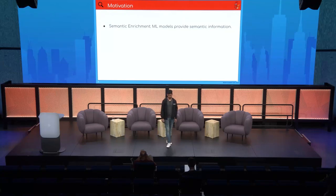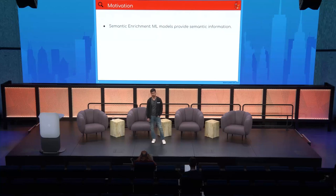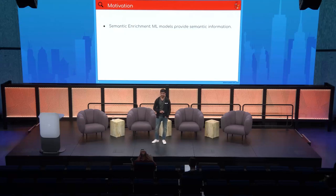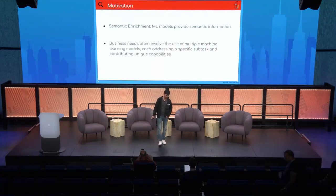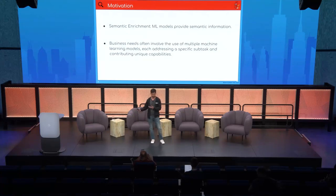Talking about the motivation: we all know that machine learning models are really good at providing semantic information. If you have an image, it can tell you what is present in the image or what the caption could be. If you have text, it can tell you the sentiment — positive or negative. And when solving a real-life problem, most of the time we use multiple machine learning models because each model is really suitable for solving some specific kind of task.